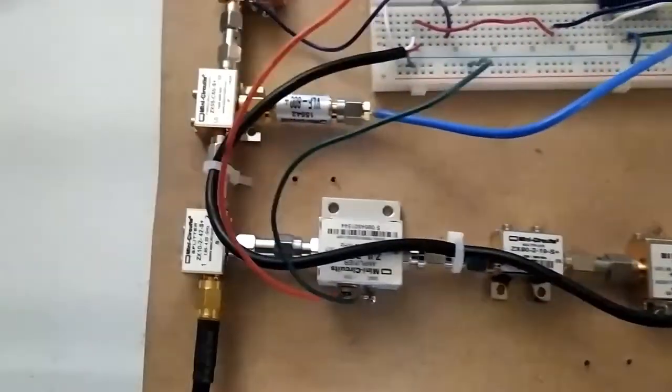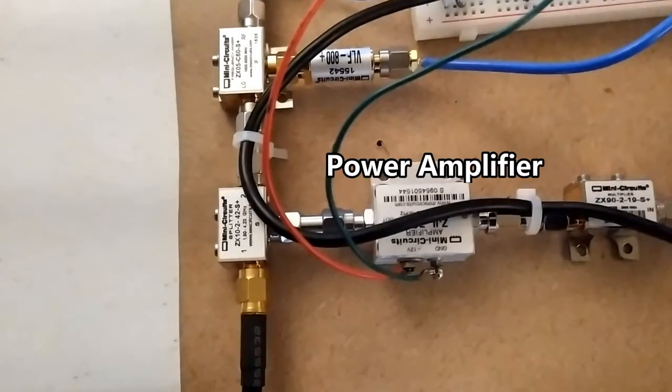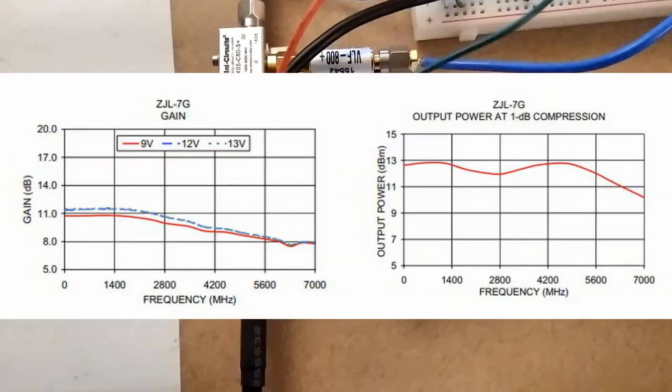But that's okay because we have our trusty power amplifier. This power amplifier requires 12V for operation, and it has a gain of about 11dB at 2.5GHz.